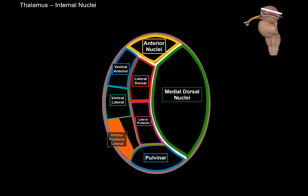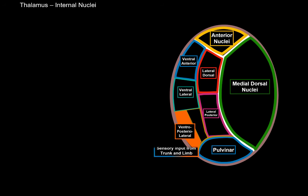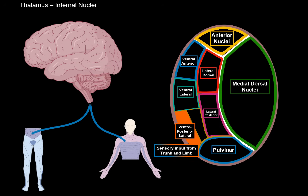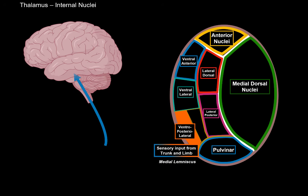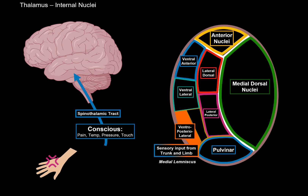The ventroposterolateral nucleus, or VPL, receives sensory information from the trunk and limbs through the gracile and cuneate fascicles, responsible for epicritic sensibility — proprioception, mechanoreceptors like touch and vibration — ascending as the medial lemniscus to the VPL and then directed to the primary somatosensory cortex. It also receives input from the spinothalamic tract, responsible for pain, temperature, pressure, and touch, which also goes to the VPL and up to the somatosensory cortex.